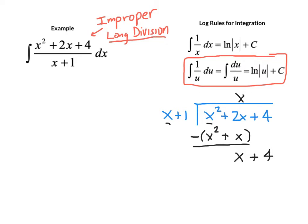So we run that again. x times 1 is x. So our final term in our quotient is 1. And then we multiply that through and subtract. And we get our remainder of 3.